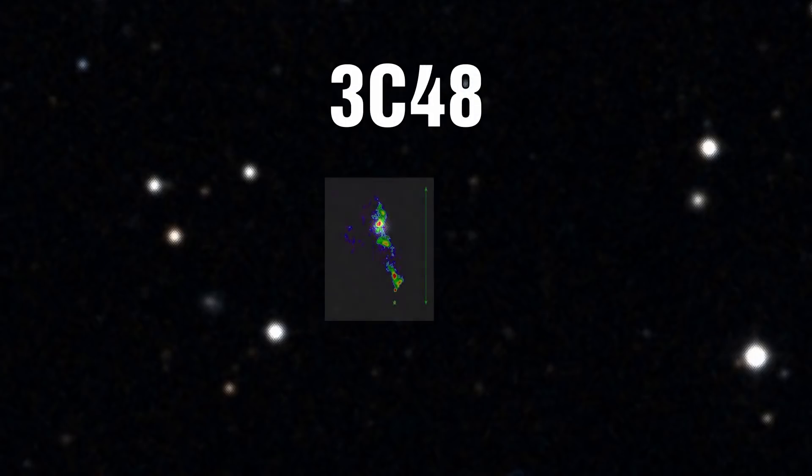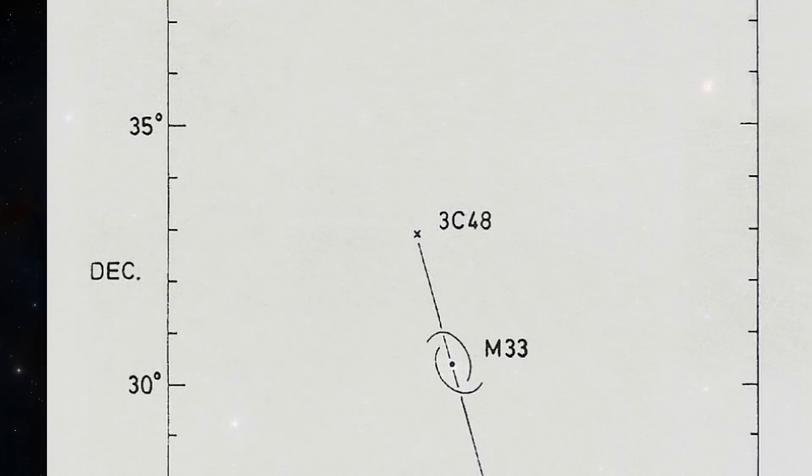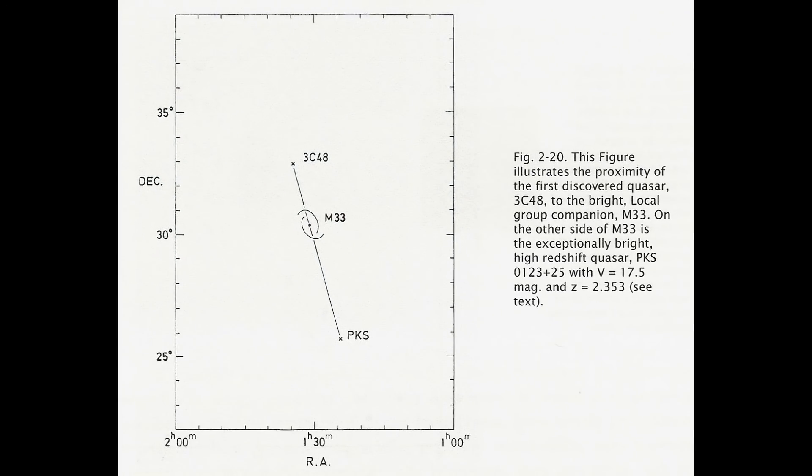3C48. Now this was the first quasar to have been discovered. M33 is one of the brightest galaxies in our local group. It is a companion galaxy to M31 and has a rather young stellar population. 3C48 sits just 2.5 degrees away from it. On the other side of M33 we find another exceptionally bright high redshift quasar PKS 0125 plus 25.